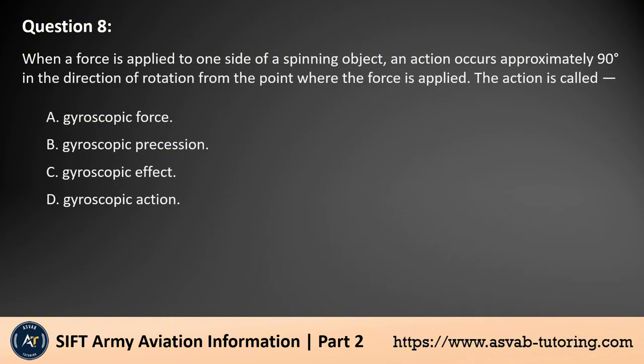Question 8. When a force is applied to one side of a spinning object, an action occurs approximately 90 degrees in the direction of rotation from the point where the force is applied. The action is called gyroscopic precession. This phenomenon occurs when a force is applied to a spinning object like a helicopter rotor, causing a reaction approximately 90 degrees later in the direction of rotation. Gyroscopic precession is a key factor in controlling a helicopter's movement, influencing how the rotor blades respond to control inputs.